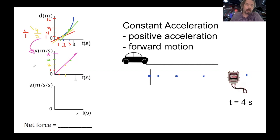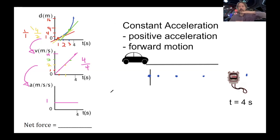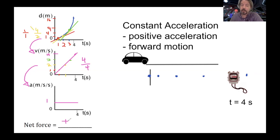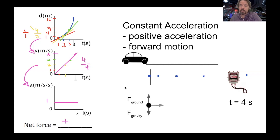We calculated slope to find velocity, and now we calculate the slope of the velocity line to find acceleration. We have a rise of four and a run of four, so four divided by four is one — our acceleration is one. The main takeaway: a curved distance line means we're going further and further faster and faster, distance is increasing at an increasing rate, which means velocity is increasing, which means there must be an acceleration. Now this acceleration is positive, so the net force will be positive.